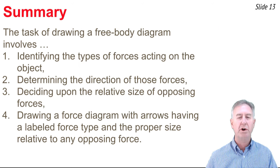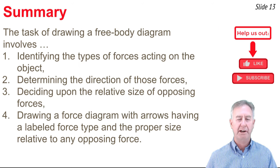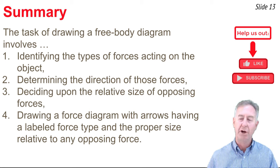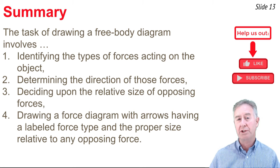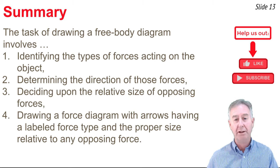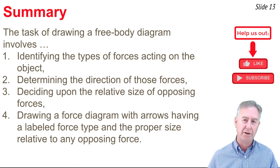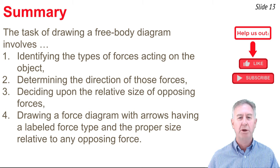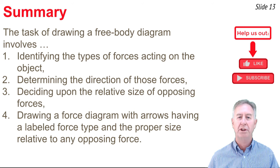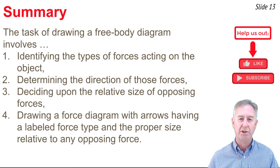To summarize, drawing a free body diagram involves four basic steps. First, determine which forces are present on the object. Second, determine which direction those forces act. Third, determine the relative size of each force compared to its opposing force. Once done, draw your diagram: put an arrow for every force, give it a labeled type, put it in the right direction, and size it so that stronger forces are represented by longer arrows.